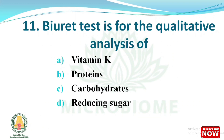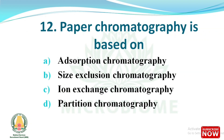The next question: the Biuret test is used for the qualitative analysis of which of the following? The options are vitamin K, proteins, carbohydrates, and reducing sugars. The right answer is option B, proteins. Next question: paper chromatography is based on which of the following? The options are absorption chromatography, size exclusion chromatography, ion exchange chromatography, partition chromatography. The right answer is option D, partition chromatography.